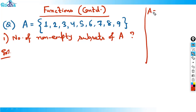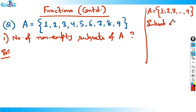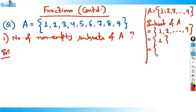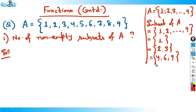If A contains all the elements from 1 to 9, then a subset is basically any part of A. So a subset of A could be the full set {1 to 9}, or just {1}, or {2, 3}, or {4, 6, 9} — any part of A. All these are subsets of A. Any part of A, including the whole of A, is called a subset.